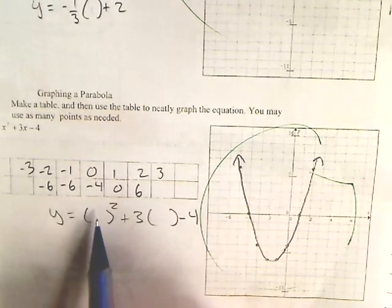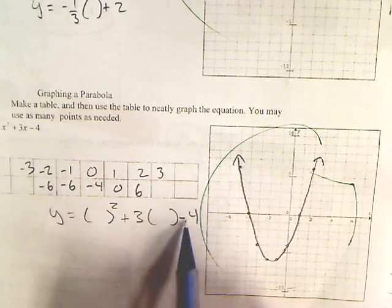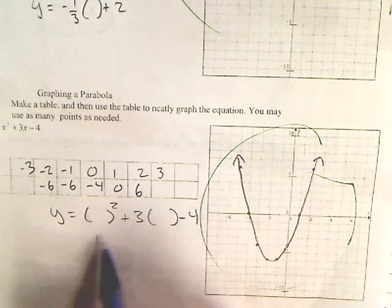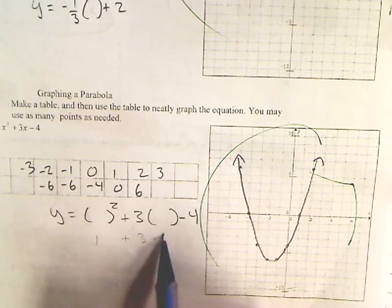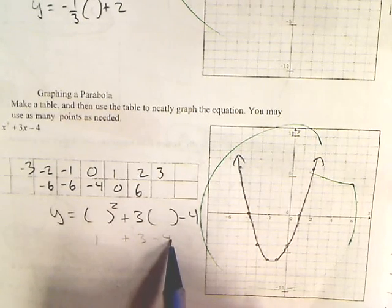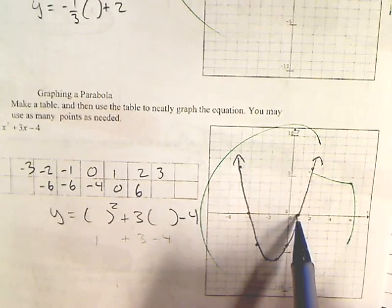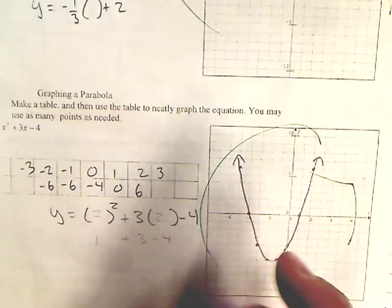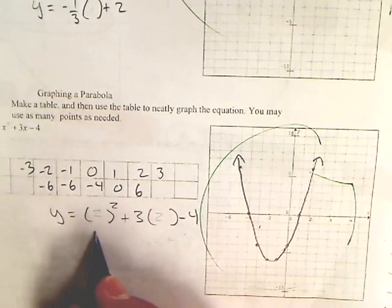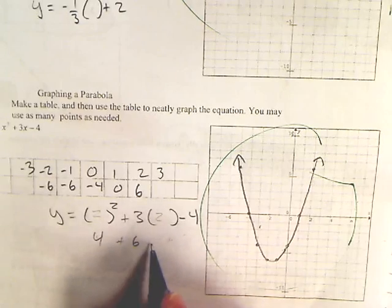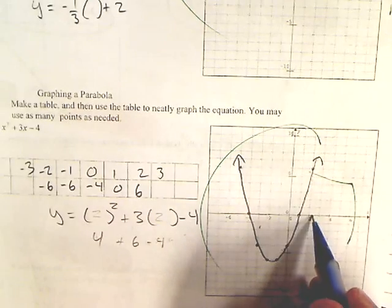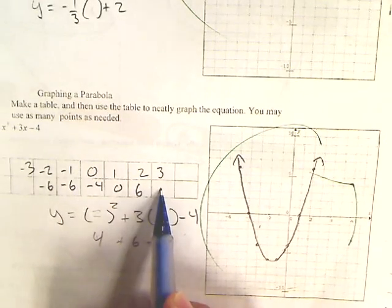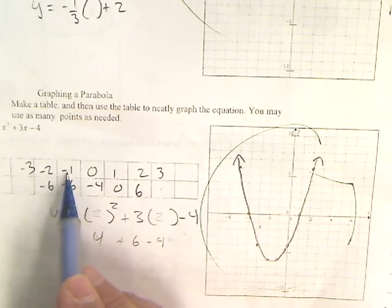Plug in zero: zero squared is zero, that's gone, negative four. So (0, -4), dot. Plug in one: one squared is one, plus one times three is three, minus four is zero. So (1, 0). Plug in two: gives me four plus six minus four, gives me six. So (2, 6), dot.